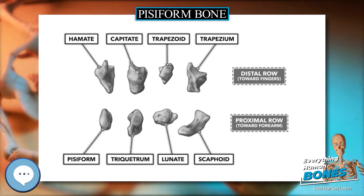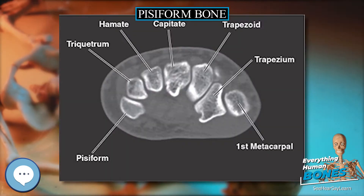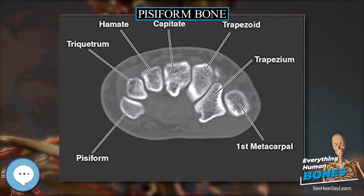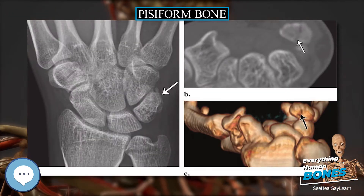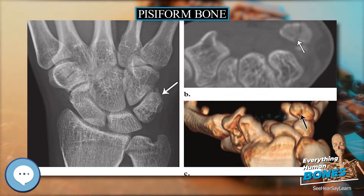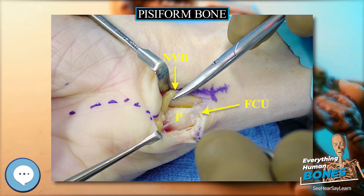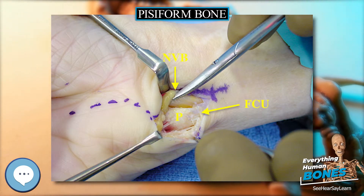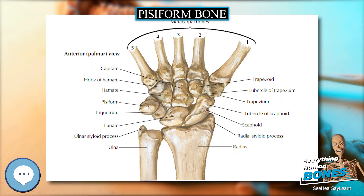The pisiform bone is most recognizable as an unassuming palmar projection forming the heel of your hand. The pisiform bone, along with the hamulus of the hamate, defines the medial boundary of the carpal tunnel, because the pisiform body acts as one of the four attachment points of the flexor retinaculum.